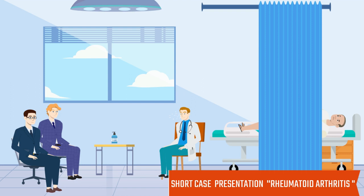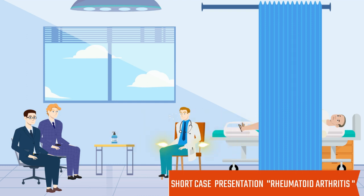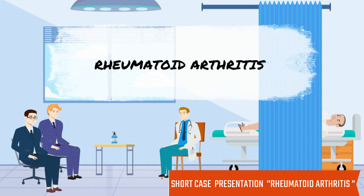There is no redness in the eyes. On auscultation of the chest, there are no basal crepitations. Heart sounds are normal. There is no splenomegaly. There is no evidence of neurological impairment. My diagnosis is rheumatoid arthritis.